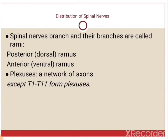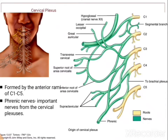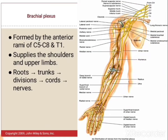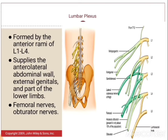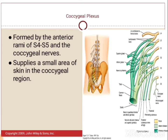Spinal nerves branch into rami — ventral ramus and dorsal ramus — and also form plexuses, except T1 to T11 which do not form any plexus. In the cervical region we have the cervical plexus, with the phrenic nerve as the most important branch supplying the diaphragm. In the upper limb we have the brachial plexus. In the lumbar region the lumbar plexus supplies the lower limb, external genitalia and anterolateral abdominal walls. In the sacral region the sacral plexus supplies the buttocks, perineum and lower part of the lower limb. In the coccygeal region the coccygeal nerves supply the area near the coccyx.